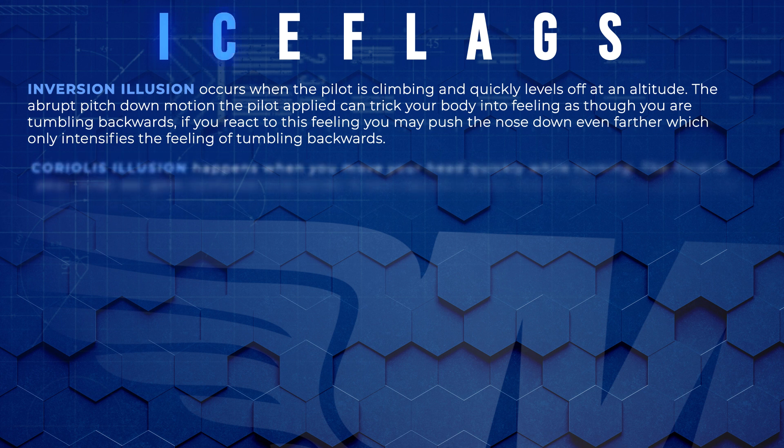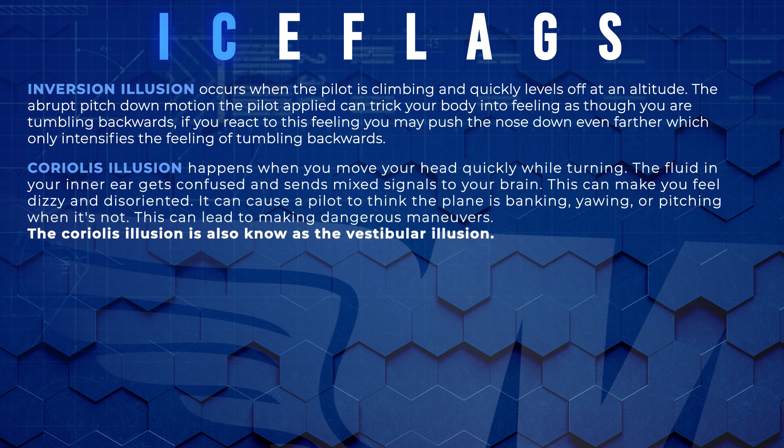C is for Coriolis illusion. This will happen when there's a quick head movement while we're in a constant rate turn. After the inner ear has stopped sensing any movements and we stop the constant rate turn, if we move our head abruptly to one side we're going to have the feeling that we're banking in the opposite direction. The typical occurrence of this is when we are doing constant rate turns during our instrument training.